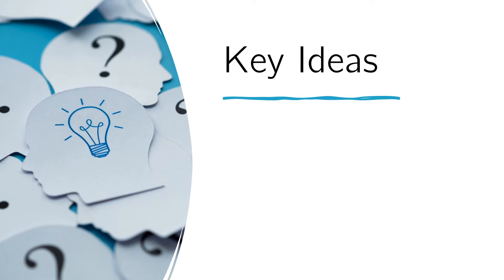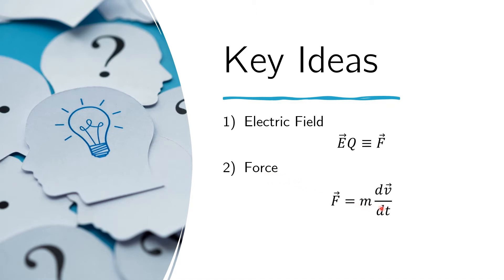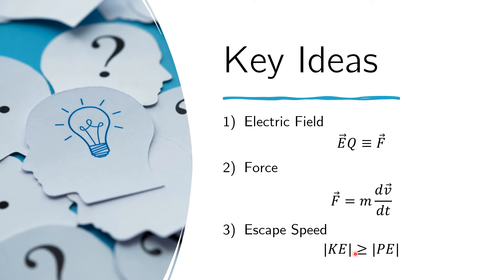There will be three concepts useful in this problem. First is the definition of electric field: it is that vector field such that when you multiply it with a test charge q, you get the force acting on that test charge. The force is defined as mass times acceleration, dv/dt, from Newton's second law. We also need to think about escape speed — the speed at which kinetic energy is greater than or equal to the potential energy. Minimum means they are equal.